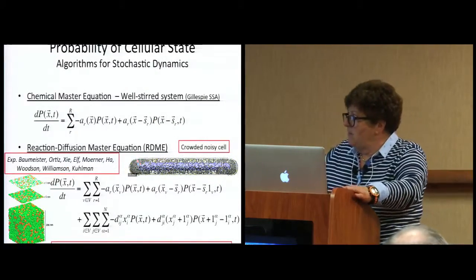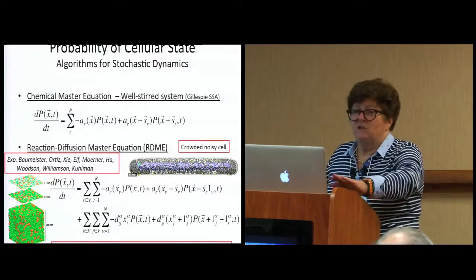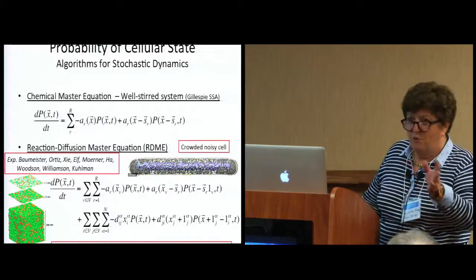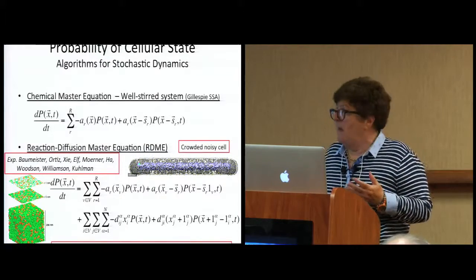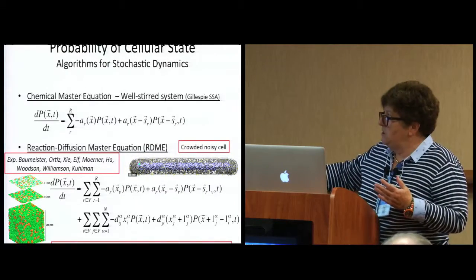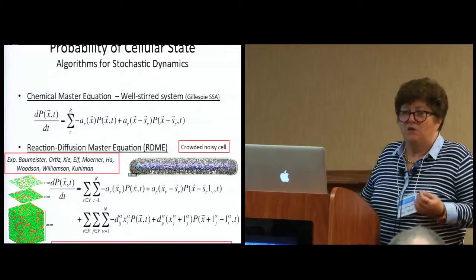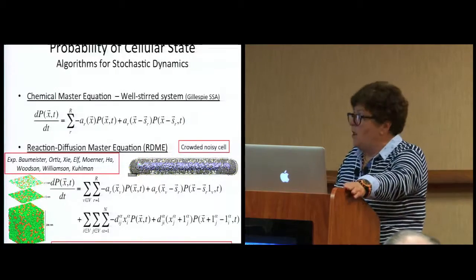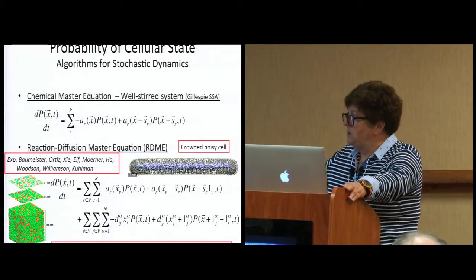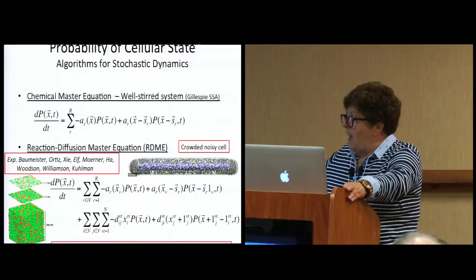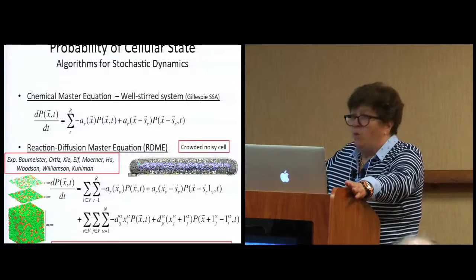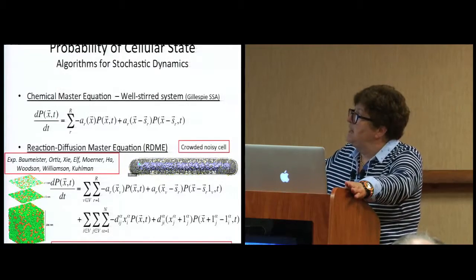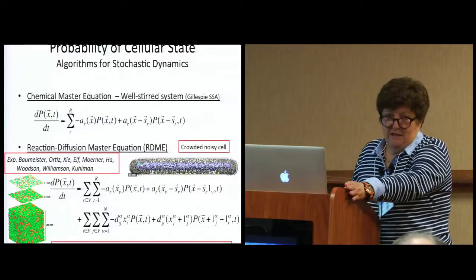So that, by that I mean, if P stands for the probability, X is a really big vector, represents all the proteins, metabolites, RNA that you're considering in your problem. And if it were really well stirred, like we use sometimes when we solve the chemical master equation, then you would write down this simple set of equations that take you out of the state that you want to be in, and reactions that take you from other states into that state, the X state.